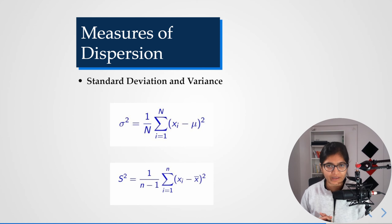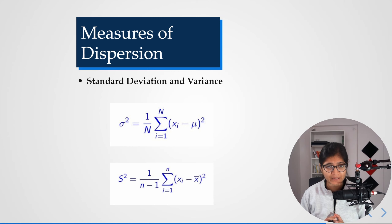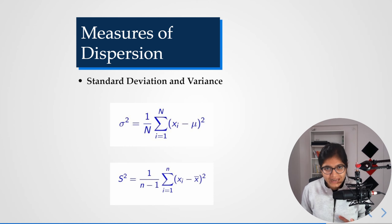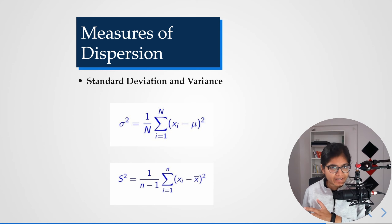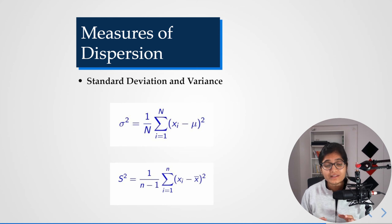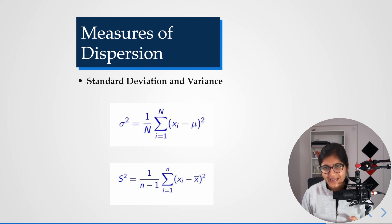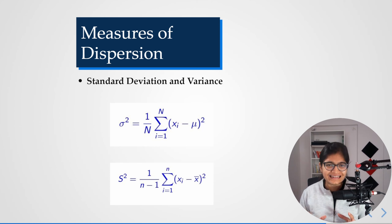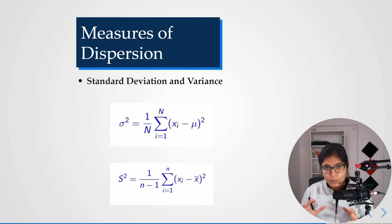Here I am talking about the last important measure of dispersion, which is standard deviation and variance. It's pretty important to understand this measure, because most of the time when we are doing a project implementation — which I will cover in upcoming videos — you will see that I am focusing on variance. I'll explain what the relationship between standard deviation and variance is in this session.